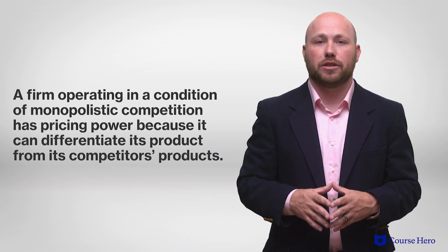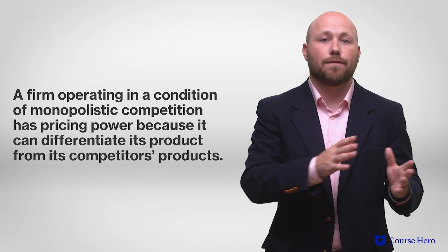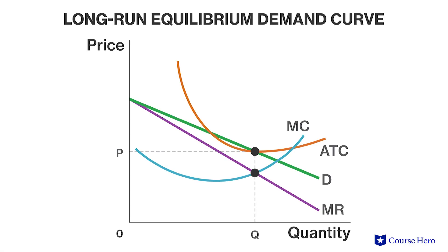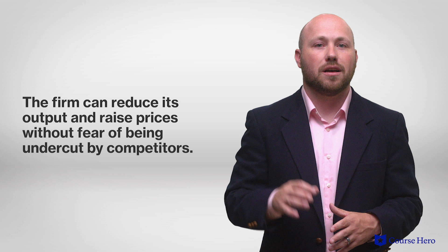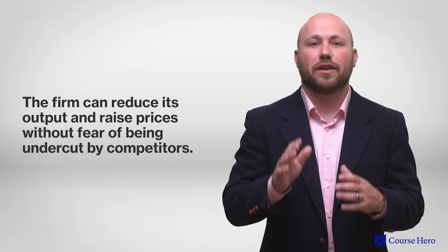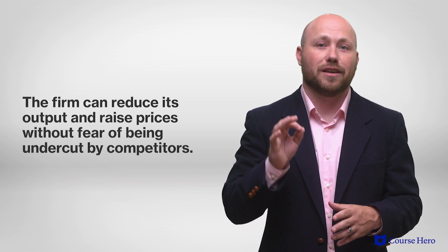A firm reaches long-run equilibrium at the point where the long-run marginal cost equals the marginal revenue, at a point corresponding to the quantity of output at which the long-run average cost curve touches the demand curve. In the short run, a firm operating in monopolistic competition has pricing power because it can differentiate its products from competitors' products. In these conditions, a monopolistically competitive firm faces the same downward sloping demand curve that a monopoly or oligopoly faces. Therefore, the firm can reduce its output and raise prices without fear of being undercut by competitors, unless the price difference is so large that consumers are prepared to forgo all of the perceived benefits of the product they usually buy.